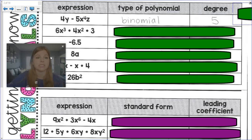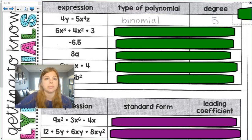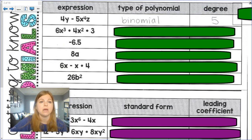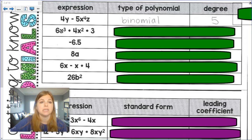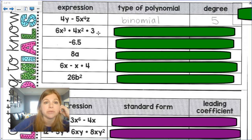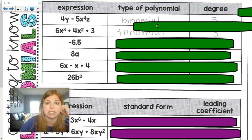Next one. 6x to the third plus 4x squared plus 3. None of these are like terms. Yes, they both have an x as a variable, but they do not have like exponents. So 6x to the third plus 4x squared plus 3 is simply just that. It's three terms, which means it's a trinomial.